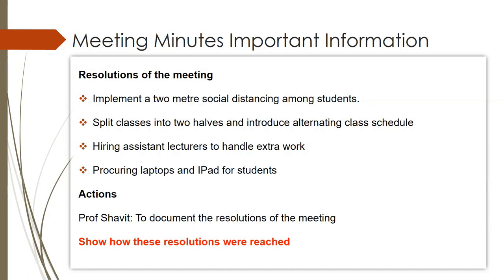The first resolution was to implement a 2-meter social distancing among students. The second resolution was to split classes into halves and introduce alternating class schedules. The third one was to hire assistant lecturers to handle the extra work. And the last resolution was to procure laptops and iPads for students. You need to demonstrate this and show this in your final meeting minutes, so everyone who reads your meeting minutes must know that they concluded on these four resolutions.